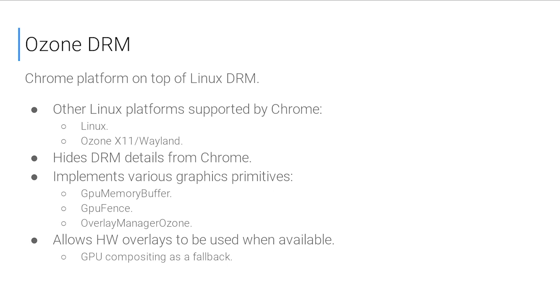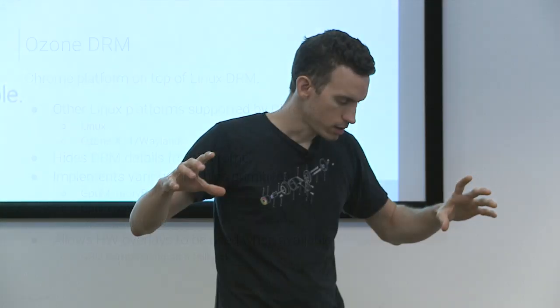Going one layer higher in the stack, we're now inside Chrome with a layer called Ozone. Ozone is an abstraction layer whose purpose is to abstract the platform — all the specifics of how you make windows, allocate graphics buffers, and display things on screen. Because it's an abstraction, it supports many backends: Chrome OS, Linux, Wayland, and even a Chromecast-specific backend. Ozone hides all these details from higher levels and exposes hardware overlays to the upper layers.